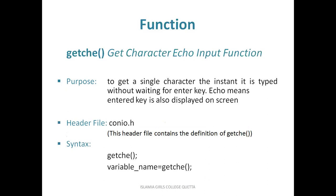The last function in this lecture is getche — get character echo. It also gets a single character the instant it is typed, without waiting for the enter key, unlike scanf. The 'e' stands for echo, meaning the character you are typing will also be displayed on the screen. It is also present in conio.h and you have to include that header file. Its syntax is similar to getch — you can write getche() simply, or if you want to store the value the user is entering, write the variable name equals getche(), and the character will be stored in that variable, which should also be of character type.